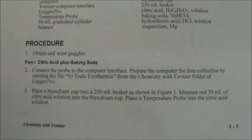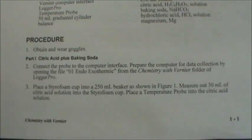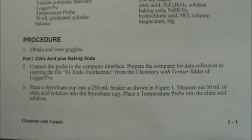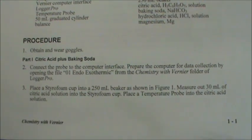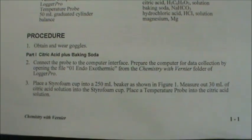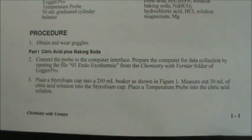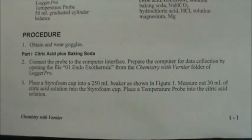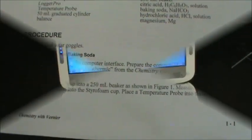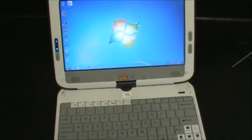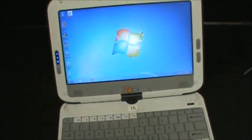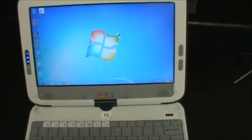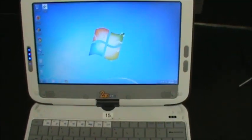When we read through the instructions, we're going to open up a file in Vernier, which is the program we use to get a collection of data, and we're going to measure out all of our chemicals. Once you open up your computer, you're going to open up Logger Pro. Logger Pro is software that Vernier has created to collect data while you actually do a lab procedure.